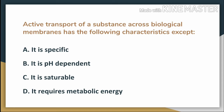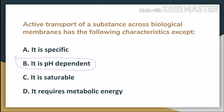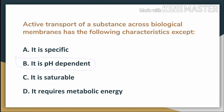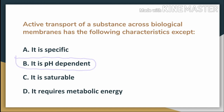The answer is option B — that it is pH dependent. We have to pay attention to the word 'except' in the question, meaning we need to identify which property does NOT belong to active transport. Active transport is specific, saturable, and requires metabolic energy, but it is not pH dependent. So option B is the answer.